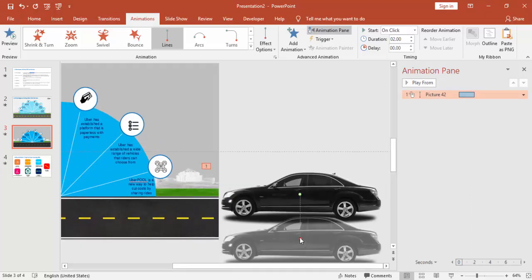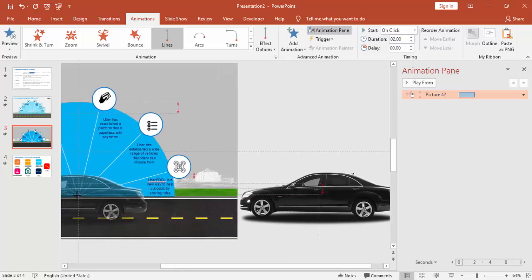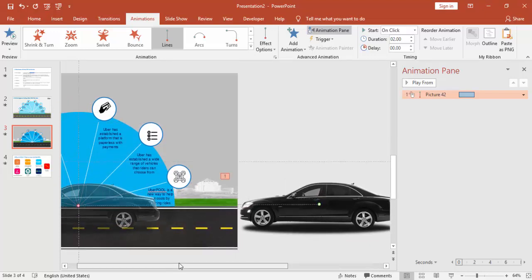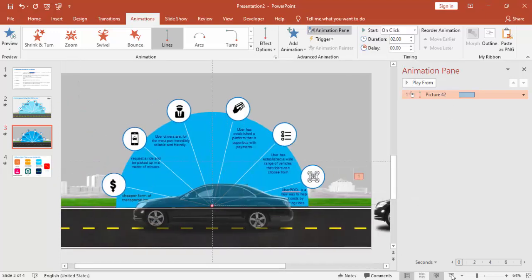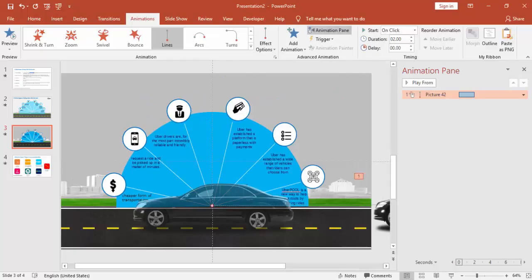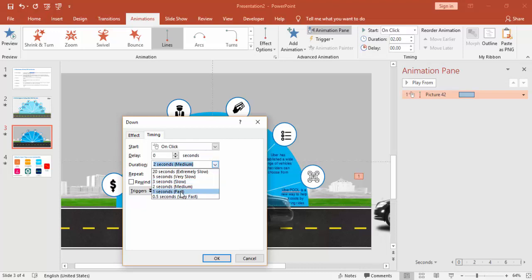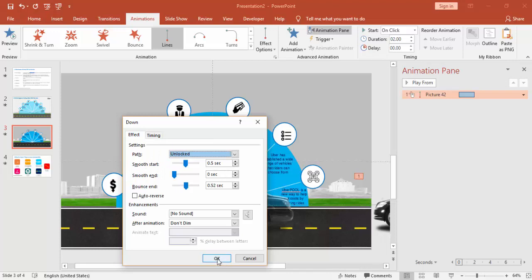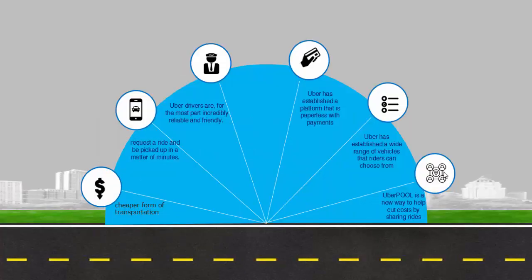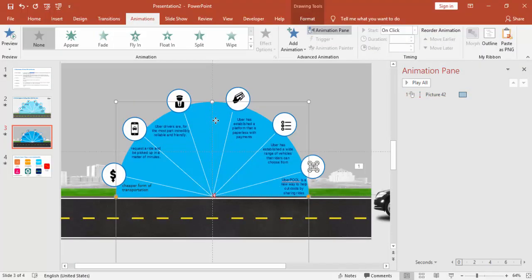Instead of going down, I'm making the car appear at the center. When I click, the car comes in. I'm going to change the animation effect — double-click and increase the bouncing effect. Under Timings, make it fast. Now I'm going to select the semicircle and give it an animation as well.